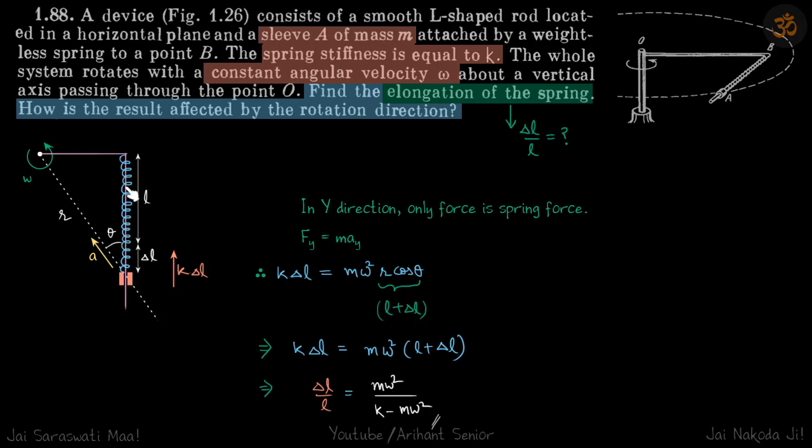We'll take the component of acceleration also in this direction and write F equals ma. In y direction only force is spring force, so we can write F equals ma_y in this direction. And the spring force is k delta l, so initial length of the spring was l and after it becomes stretched the total length becomes l plus delta l and force of course is k delta l. So the only force in this direction is k delta l and its acceleration in this direction is a cos theta. Theta is not given, we are just assuming it to be a variable for now.